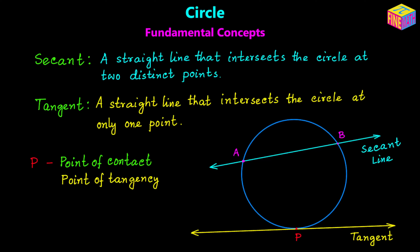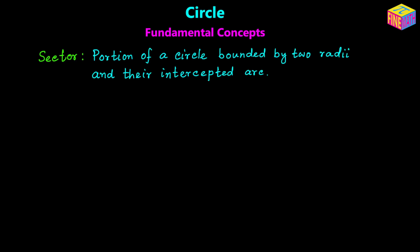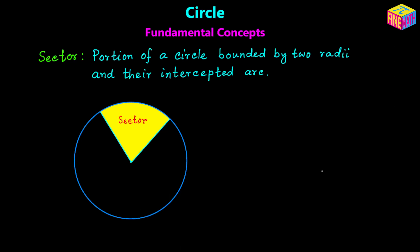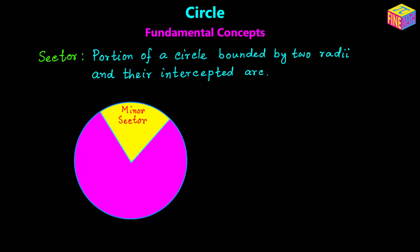Next we are going to discuss about sector. A sector is a portion of a circle bounded by two radii and their intercepted arc. Here I have a circle with the light green dot as the center, and I draw two radii forming a V-shaped space — the yellow portion is called a sector. Because this sector is formed by two radii and a minor arc, it is called a minor sector. The remaining portion, highlighted in pink, is called the major sector.